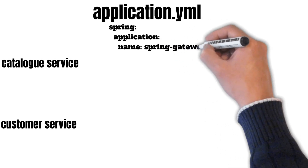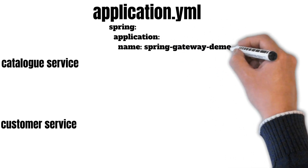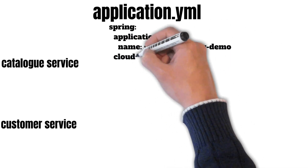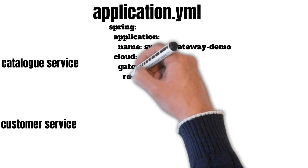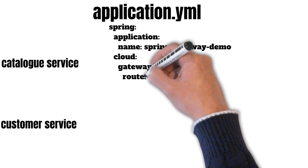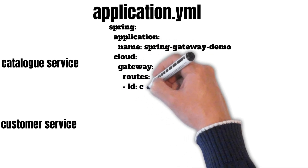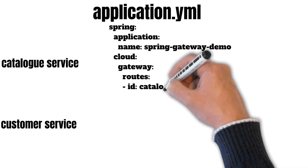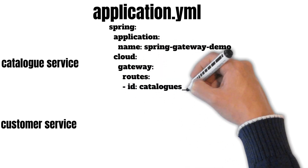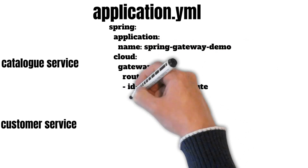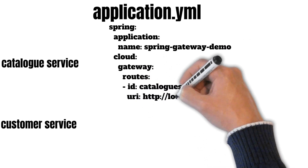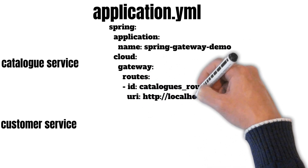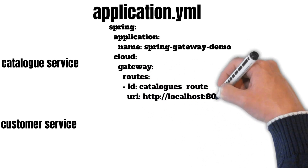After the application name, we configure routes inside our cloud gateway tag. For the first route, suppose we give it the name 'catalog_route', and it is running on a separate container on localhost on port number 8081.